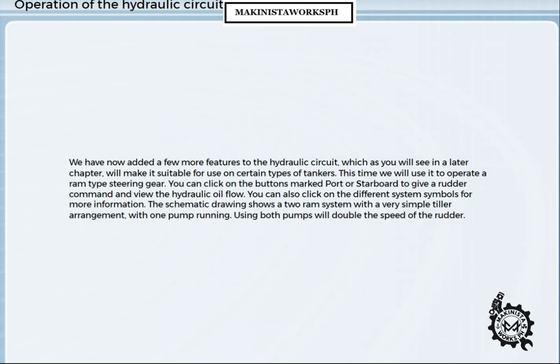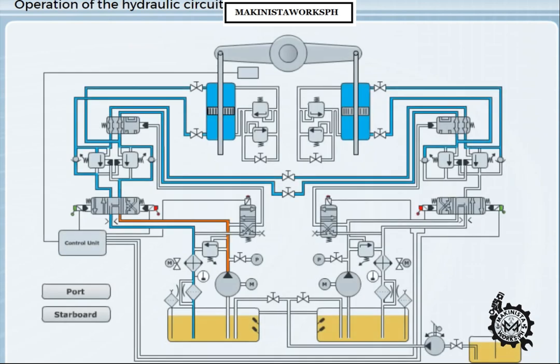We have now added a few more features to the hydraulic circuit, which, as you will see in a later chapter, will make it suitable for use on certain types of tankers. This time, we will use it to operate a ram type steering gear. You can click on the buttons marked Port or Starboard to give a rudder command and view the hydraulic oil flow. You can also click on the different system symbols for more information. The schematic drawing shows a two-ram system with a very simple tiller arrangement with one pump running. Using both pumps will double the speed of the rudder. Mouse over the different components to get an explanation of each.